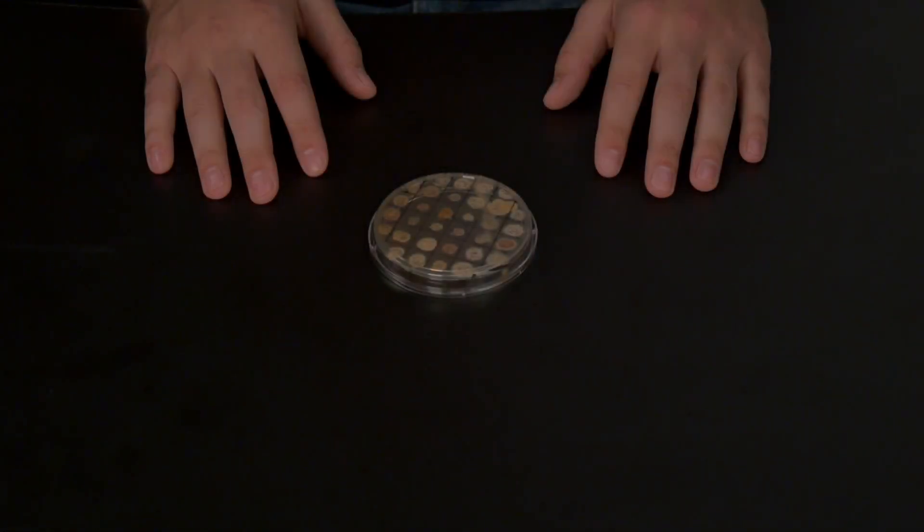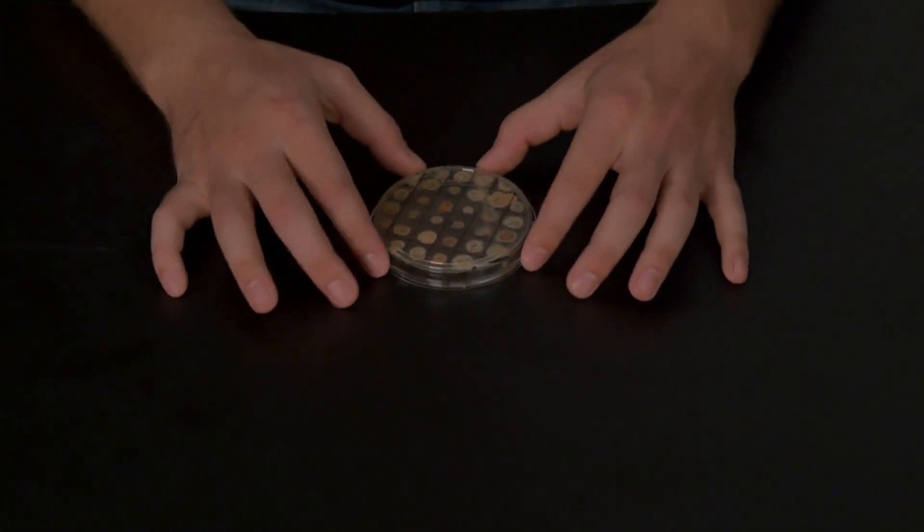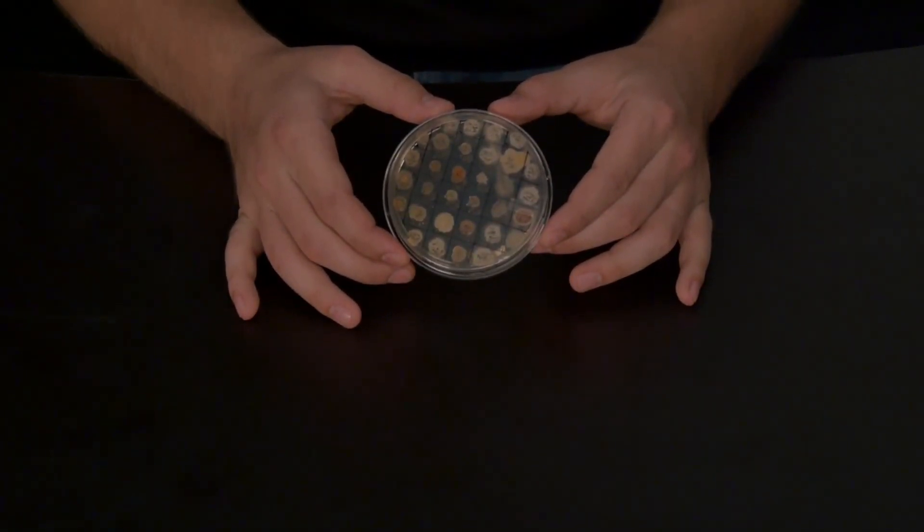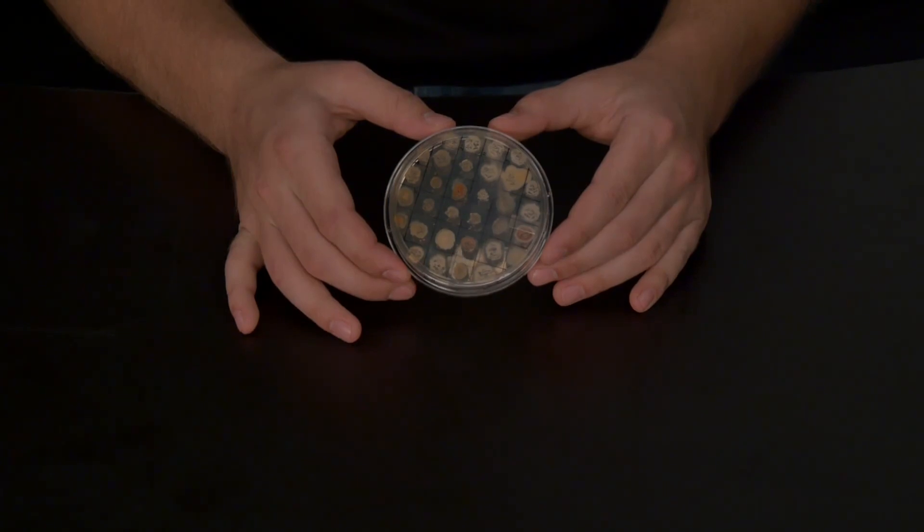Once we have completed our serial dilutions of bacteria, we will now organize them into rows and columns on a new petri dish. We have named this technique patch plating.